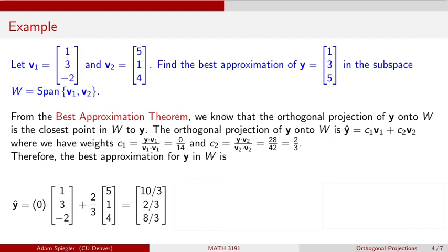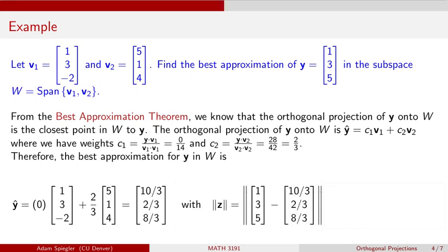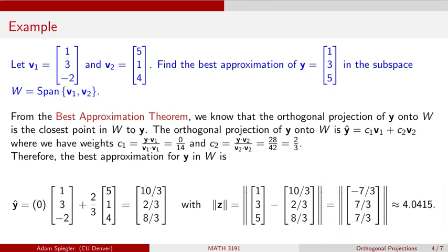The error is the magnitude of the component z which is orthogonal to the subspace. To find z, we take our initial value (1, 3, 5) and subtract the approximation (10/3, 2/3, 8/3). The error vector is (−7/3, 7/3, 7/3). We calculate its magnitude by taking the square root of (−7/3)² + (7/3)² + (7/3)², giving us approximately an error of 4. To verify all these calculations, check out the Colab notebook linked in the description.